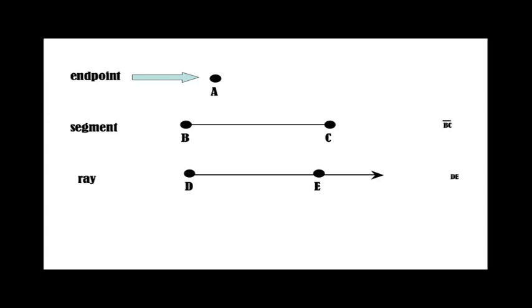To describe a ray, we use the two endpoints and again use a symbol. In this case, the symbol matches the look of the ray, a segment with an arrow on one end.